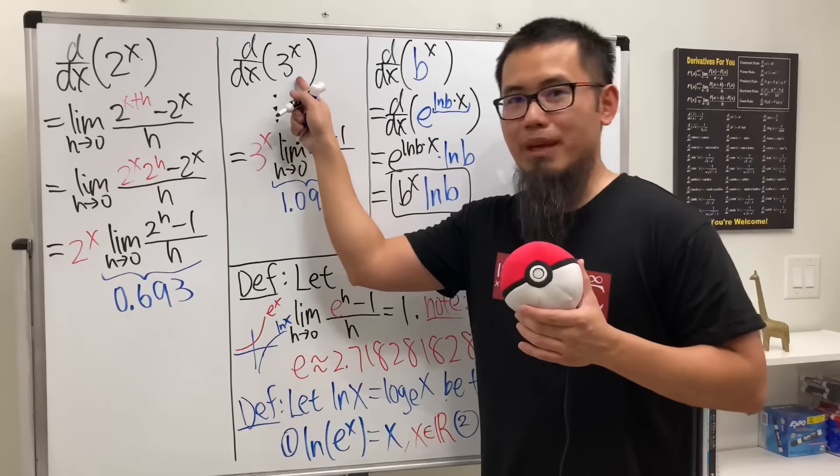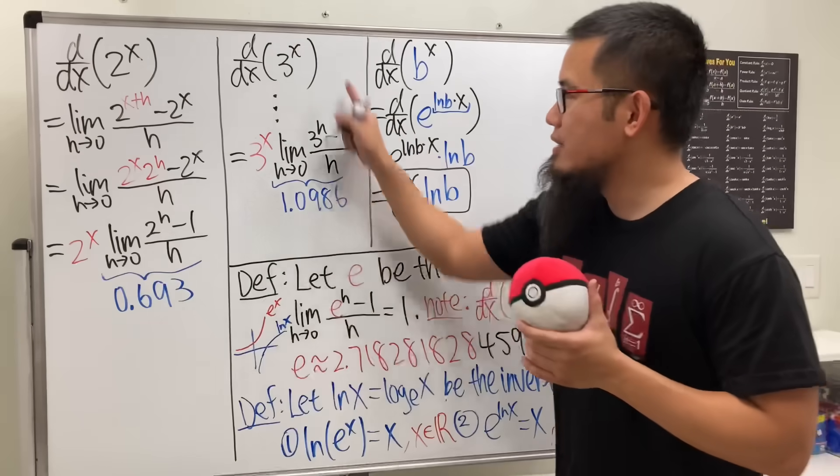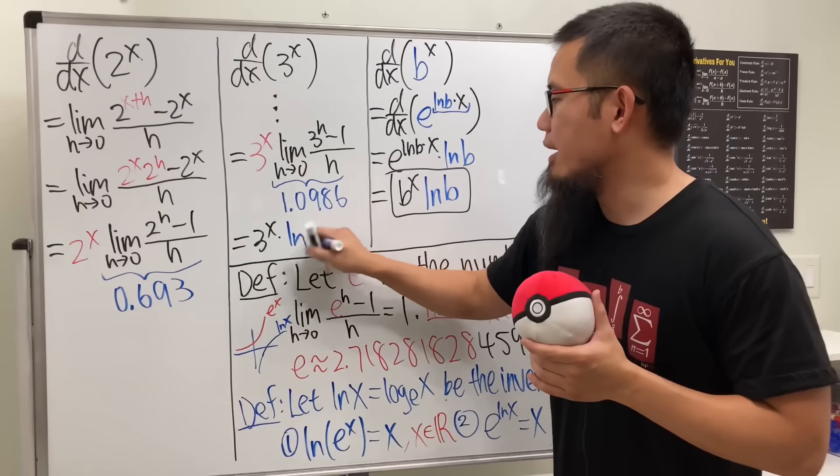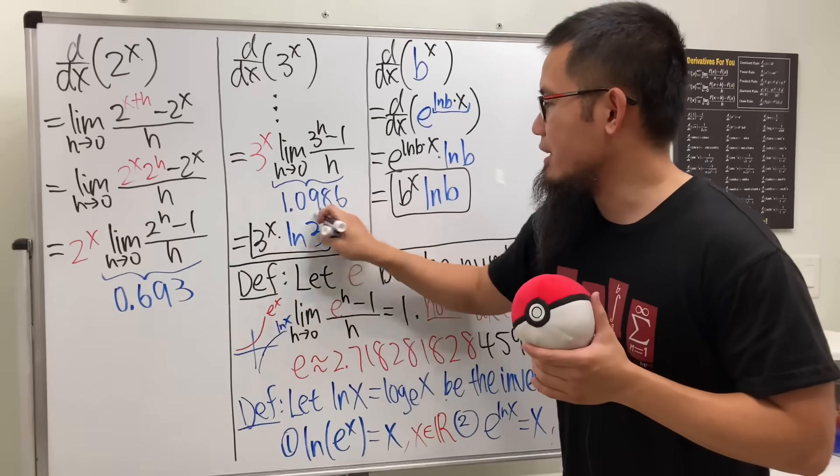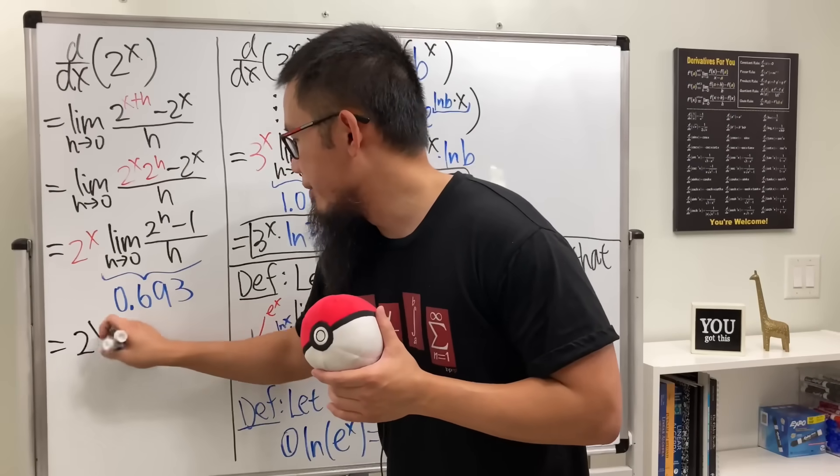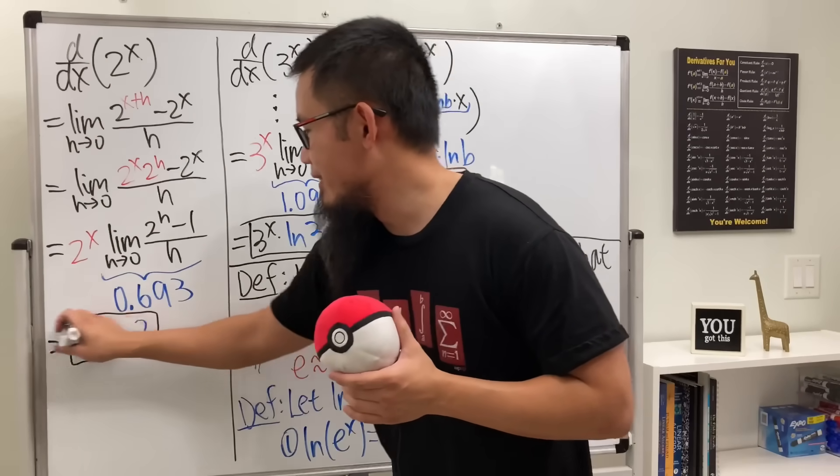We just have to look at what the base is. And yes, this is just going to be ln 3. So the derivative of this is just going to be 3 to the x times ln 3. Similarly, this is going to be 2 to the x times ln 2. Very cool, huh?